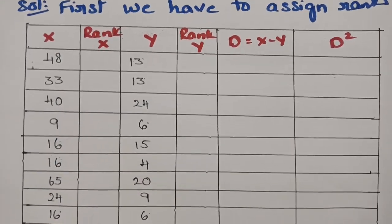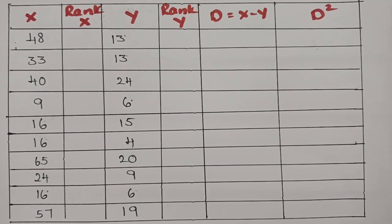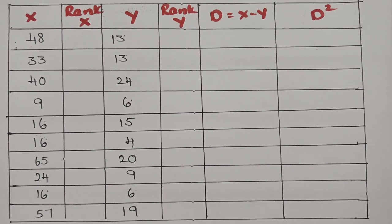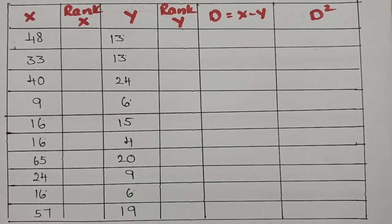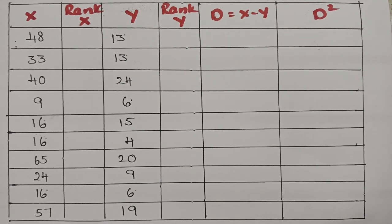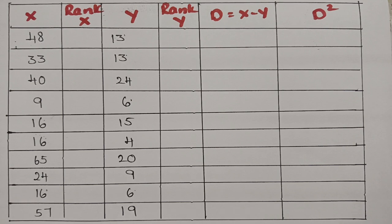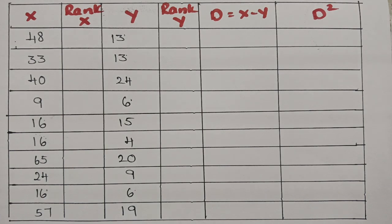In column 1 I have posted all the grades: 48, 33, 49, 16, 16, 65, 24, 16 and 54, and here are all the Y series. So first of all we have to give the rank here. While giving the rank please use a pencil because if you get a mistake you can erase it. From the lowest I'm taking as rank 1.